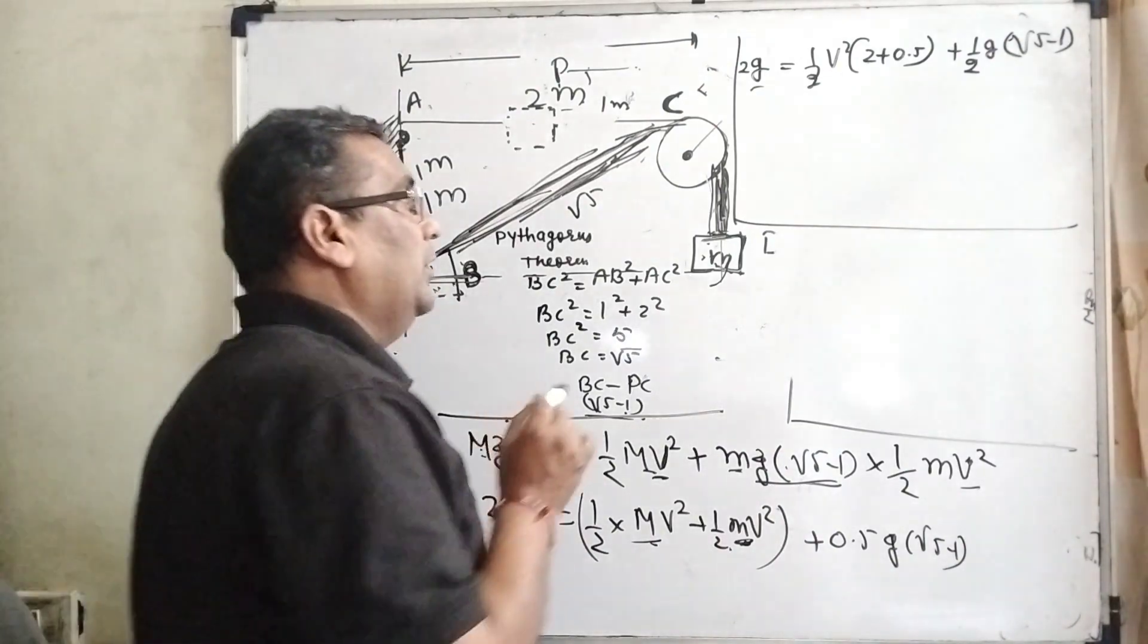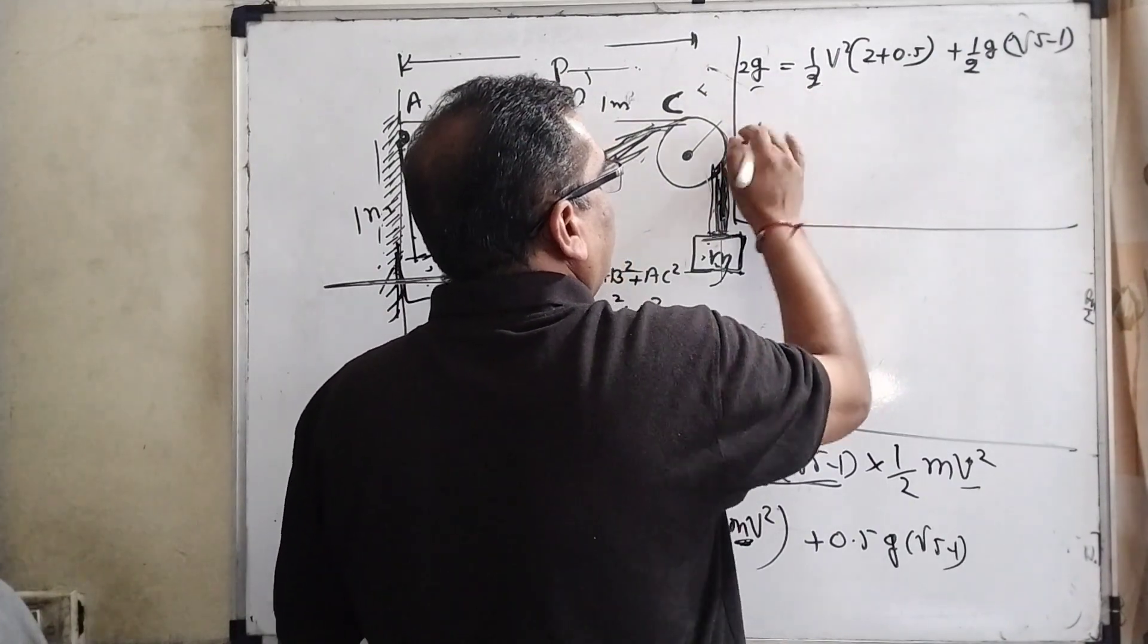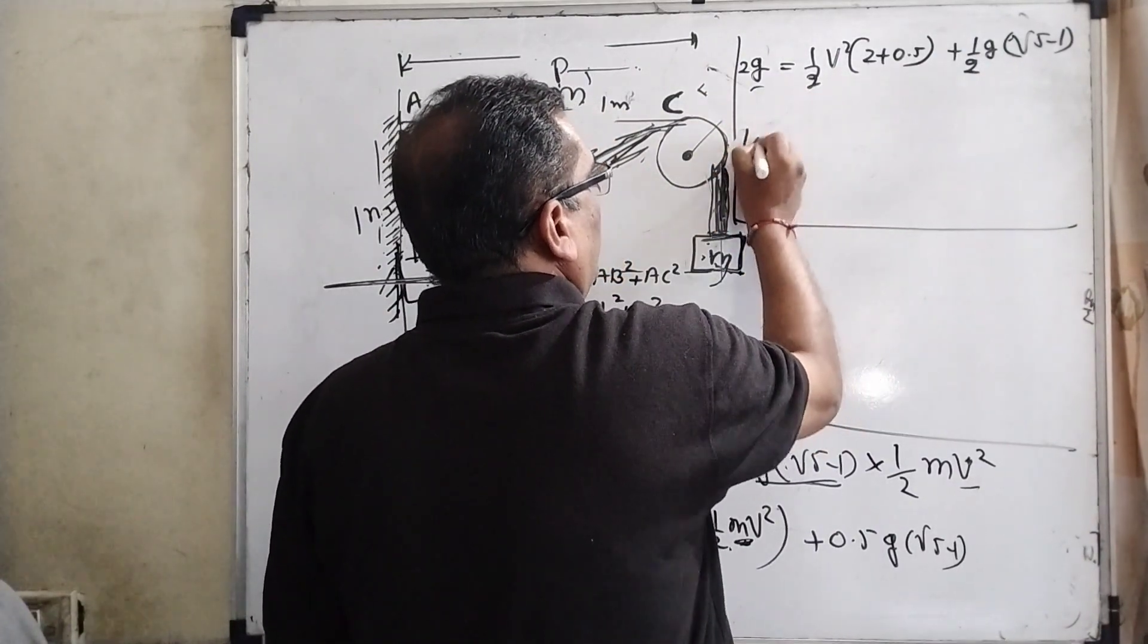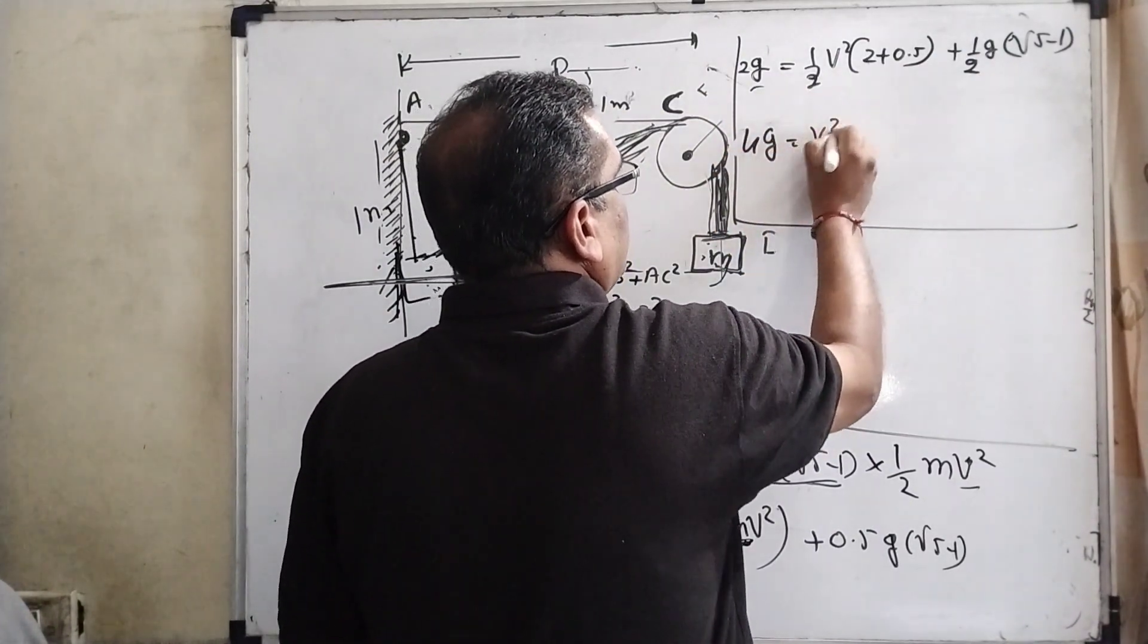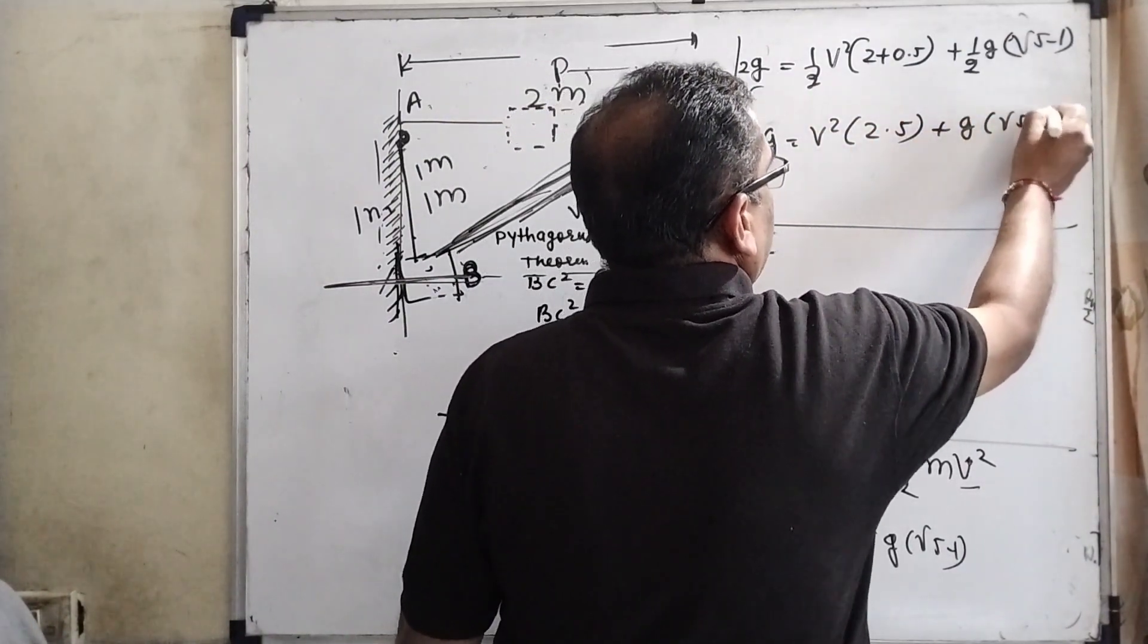Is it clear? Because this potential energy converts into three forms: the kinetic energy of this block is increasing, kinetic energy here also, and potential energy along with this potential energy also increases for the small block.